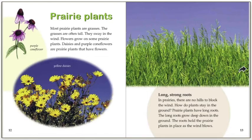Prairie plants. Most prairie plants are grasses — the grasses are often tall and they sway in the wind. Flowers grow on some prairie plants; daisies and purple coneflowers are prairie plants that have flowers. In prairies there are no hills to block the wind, so how do plants stay in the ground? Prairie plants have long, strong roots that grow deep down in the ground. The roots hold the prairie plants in place as the wind blows.